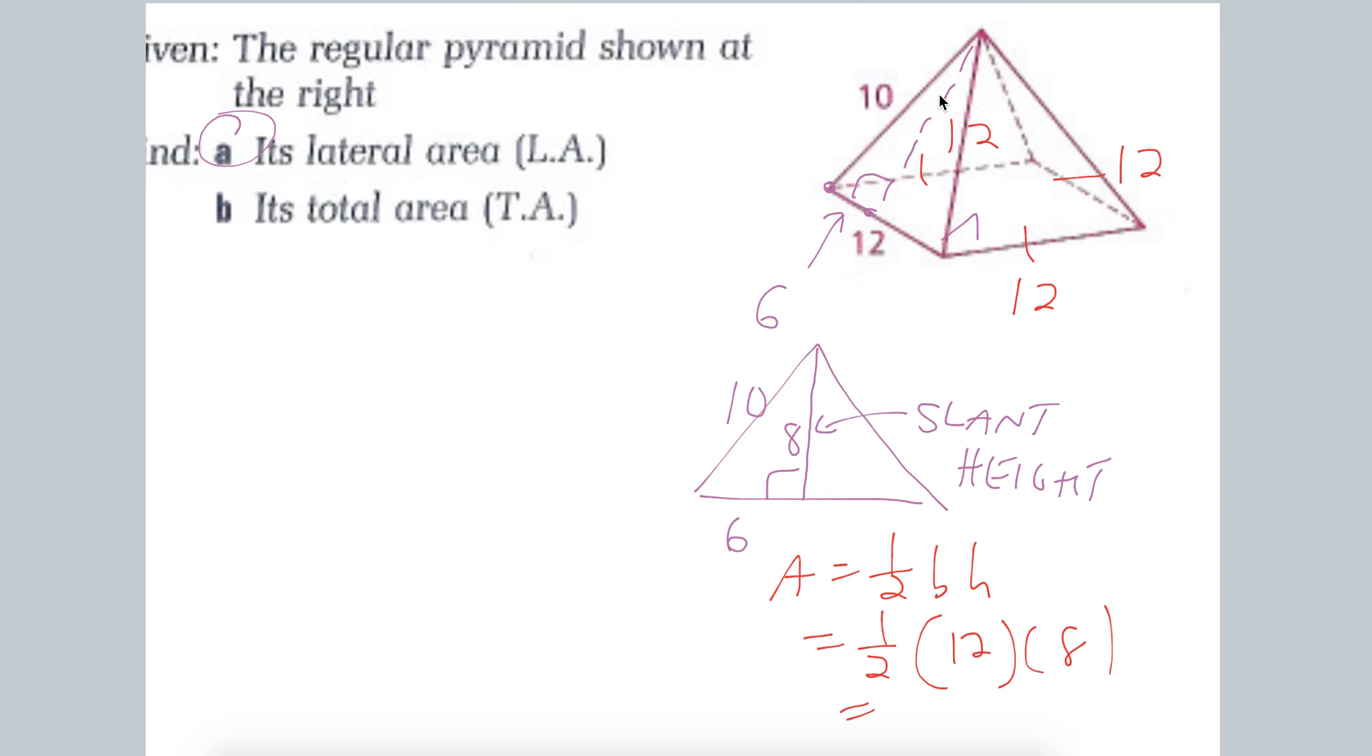So if we do that, 1 half of 12 is 6 times 8, 48. So one of these lateral faces has an area of 48. And how many of those do we have? Well, we have 1, 2, 3, 4.